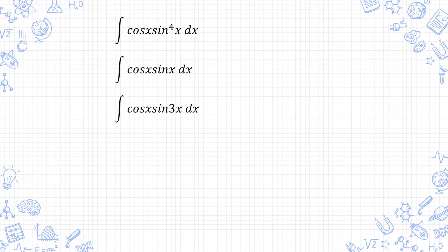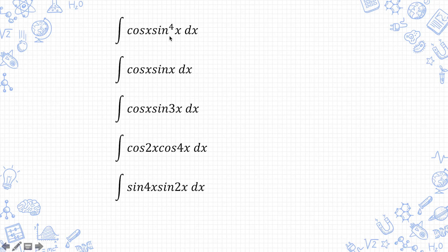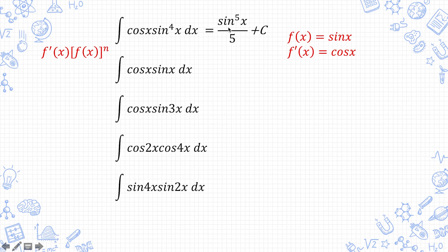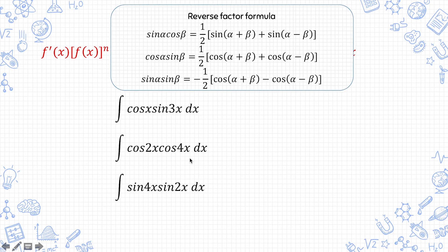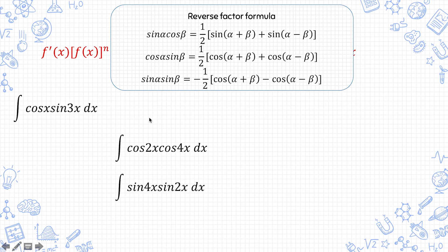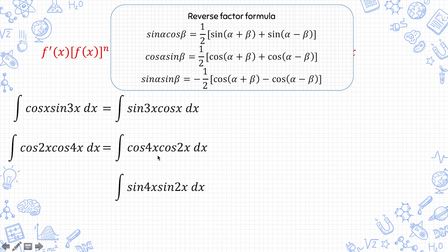How do you deal with products of sine and cosine? If you have cosine x with sine x, or cosine 2x and sine 2x, or cosine 3x with sine 3x — where the argument inside is the same — then you can apply the f'(x) times f(x) to the power of n method. Here, if f(x) is sine x then f'(x) is cosine x, so the expression equals sine 5x over 5, and cosine x times sine x would give sine squared x over 2. On the other hand, if the arguments are not the same — like x with 3x, or 2x with 4x — you need to use the reverse factor formula. I suggest writing the bigger one in front: so instead of cos x times sine 3x, write sine 3x times cos x.